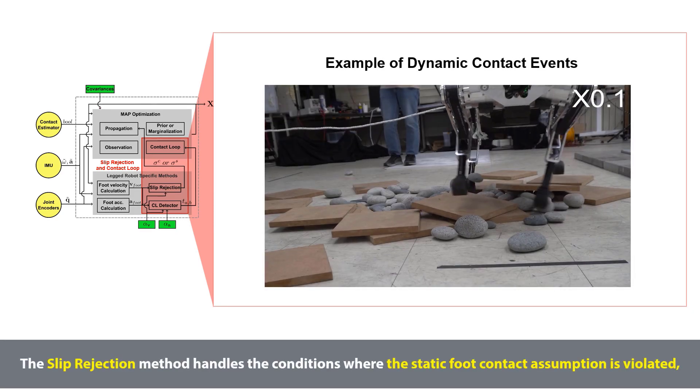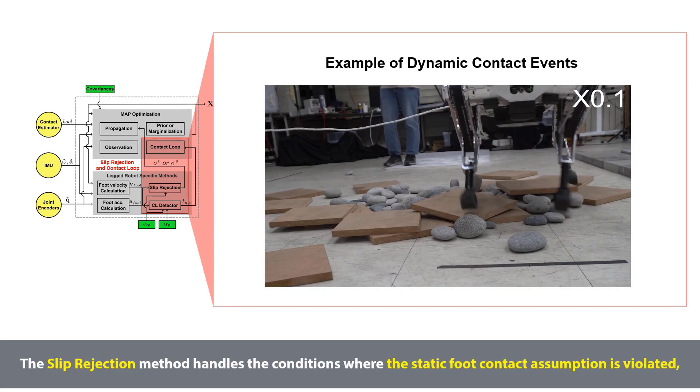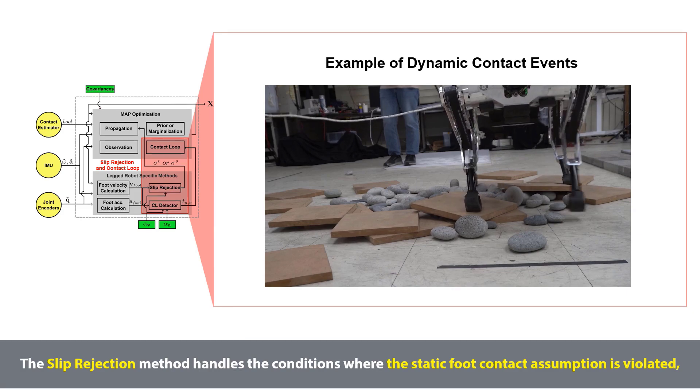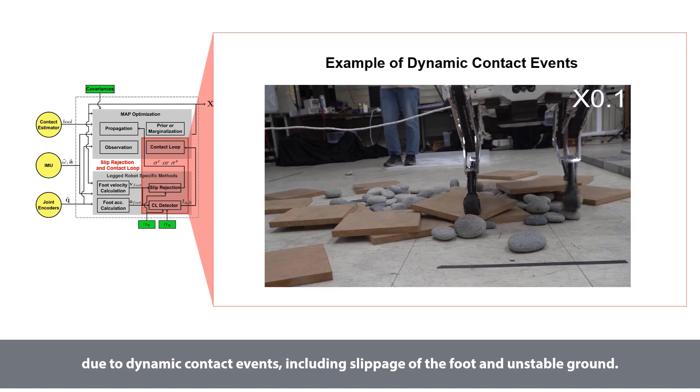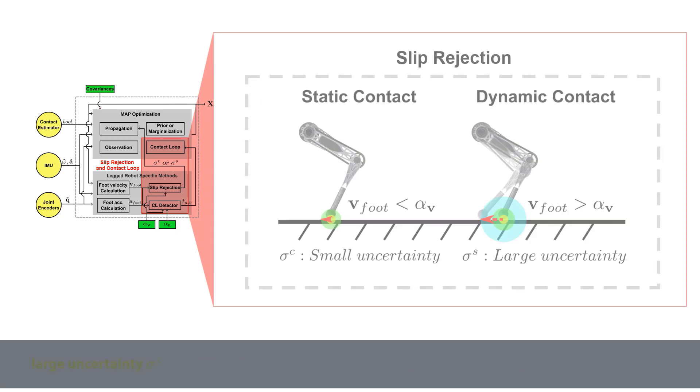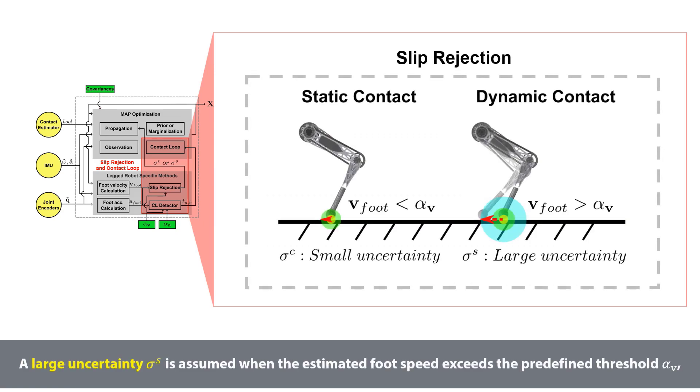The slip rejection method handles the conditions where the static foot contact assumption is violated, due to dynamic contact events, including slippage of the foot and unstable ground. A large uncertainty sigma s is assumed when the estimated foot speed exceeds the predefined threshold alpha v, whereas a small uncertainty sigma c is presumed when the estimated foot speed is lower than the threshold.